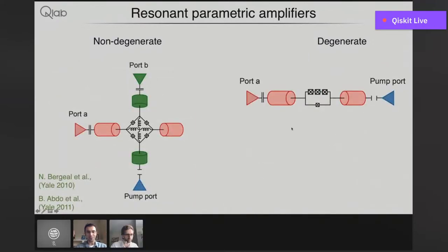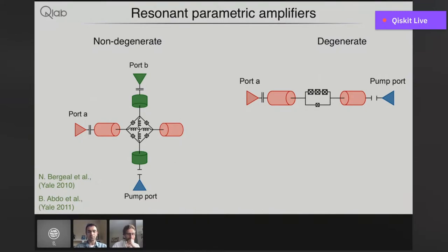Let's go to a lower level of abstraction and look at how we can realize these Hamiltonians with circuits. On the left is the non-degenerate amplifier: it has two modes realized using transmission line resonators that cross in the middle where we have this mixing element based on Josephson junctions called the Josephson ring modulator or JRM. The whole thing is also known as a Josephson parametric converter. On the right is a much simpler circuit with a single mode, which is made nonlinear through another mixing element — which is actually the SNAIL, but we'll get back to this a little later.